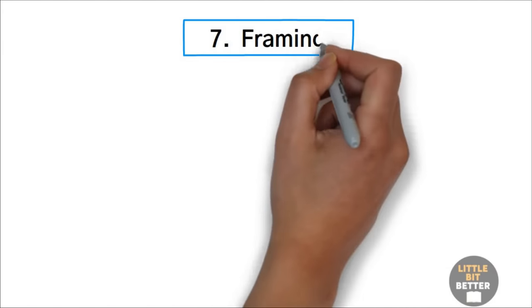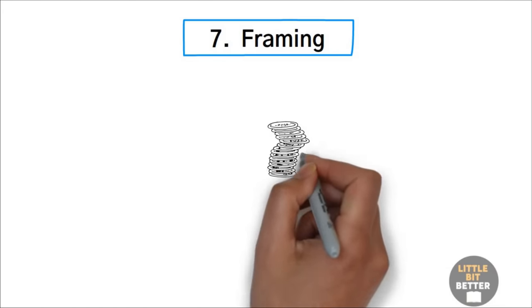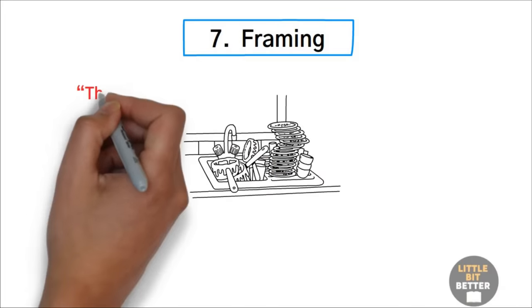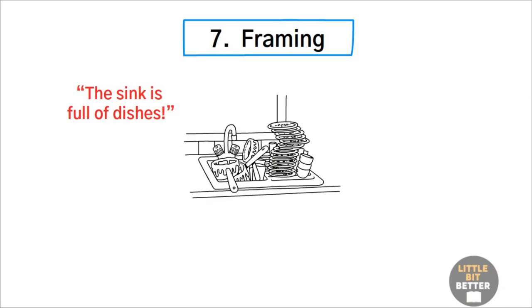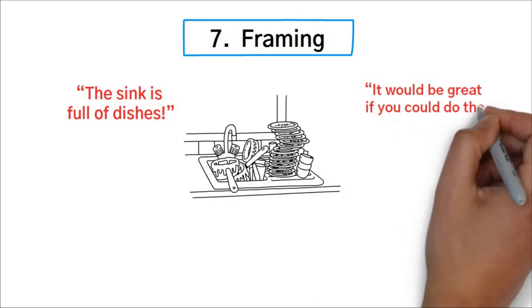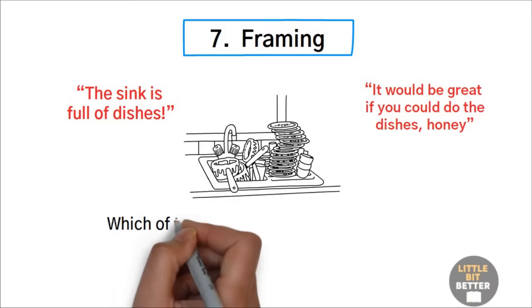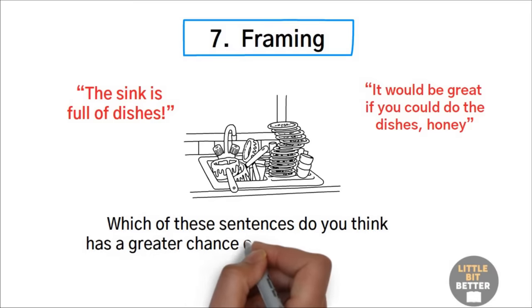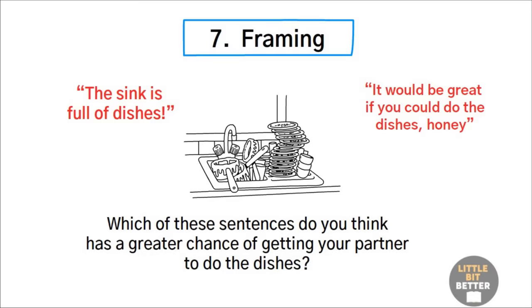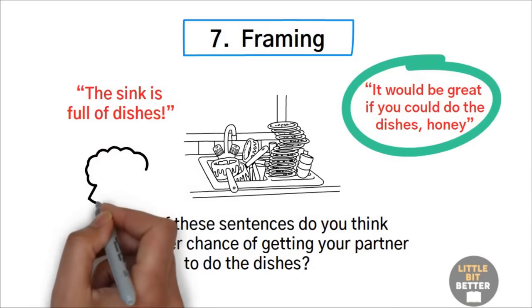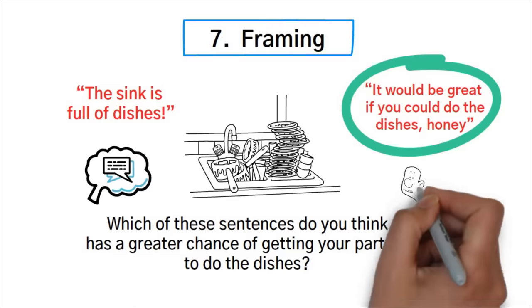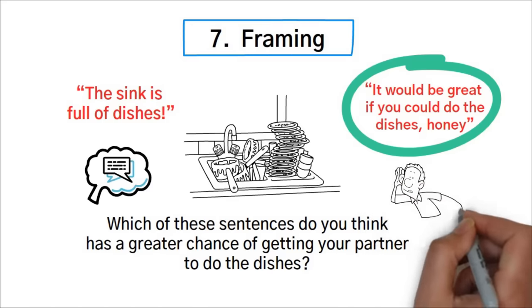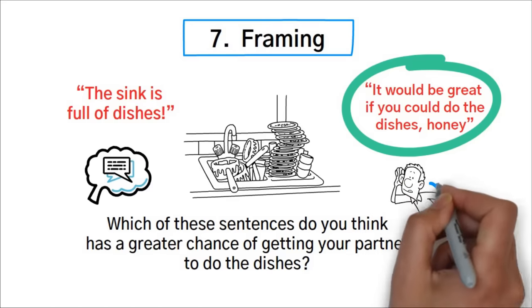Number seven: Framing. Consider these two statements. A. The sink is full of dishes. B. It would be great if you could do the dishes, honey. Which of these sentences do you think has a greater chance of getting your partner to do the dishes? Letter B, of course. In marriage and in other situations too, if a message is communicated in different ways, it will also be received in different ways. This is called framing.